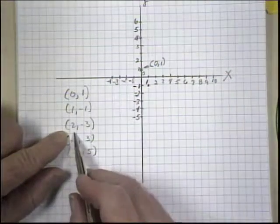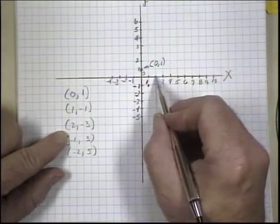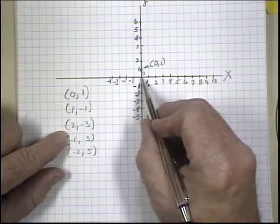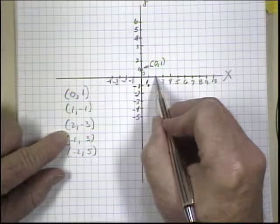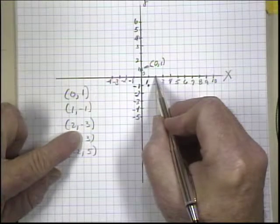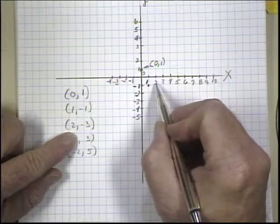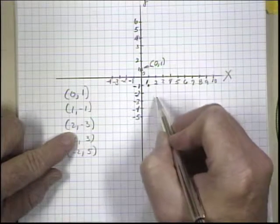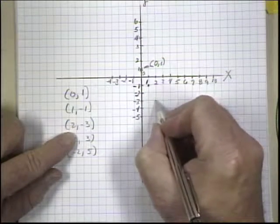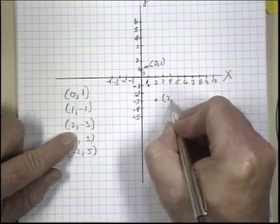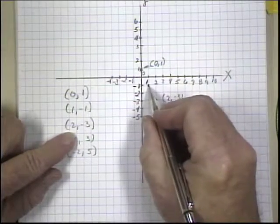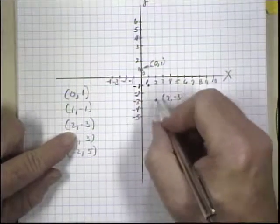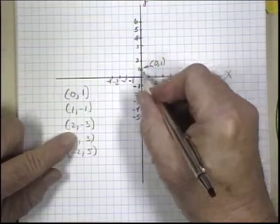And my third point is 2 and minus 3. So I'd go over 2 on the x-axis and down 3 to negative 3 on the y, minus 1, minus 2, minus 3. This point is right here. And I'll write that here. I didn't write it on this one because I didn't have room to write it. But we know I have now 3 points.